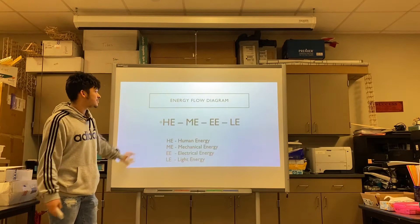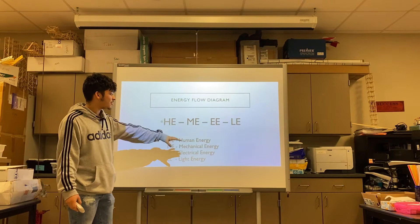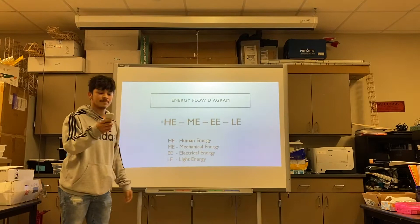This is the energy flow diagram. It shows the movement of energy when producing the light. It starts off with the human energy, which is whatever you use your hand, to mechanical energy, and then it goes to electrical, and then it produces the light energy.